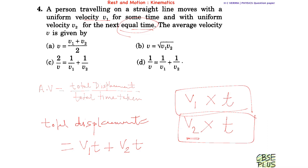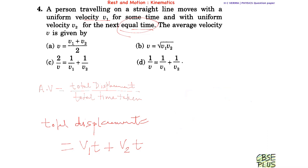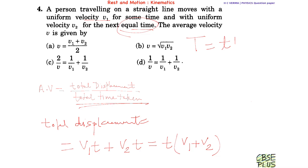The total displacement is t(v1 + v2), taking t out as a common factor. Now, total time elapsed is t plus t, because both chunks are covered in equal time t, so total time is 2t.